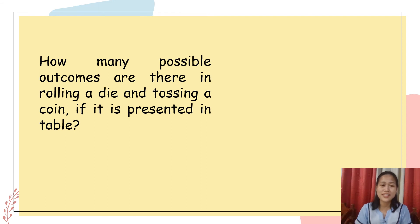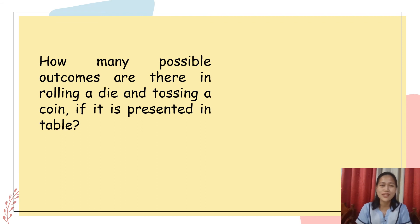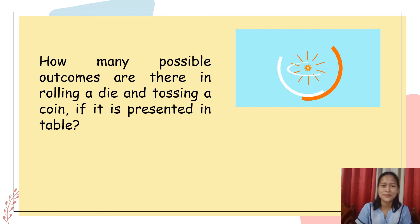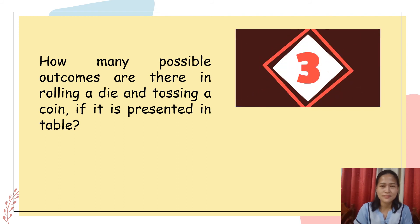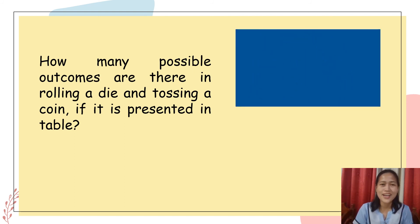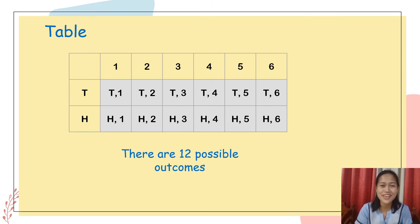Now let's consider this problem. How many possible outcomes are there in rolling a die and tossing a coin if presented in a table? I'll give you 10 seconds — you may start now. Time's up, let's reveal the correct answer. How many of you got the correct answer? I'm glad to hear that — very good, most of you got it correctly, and two thumbs up for that!